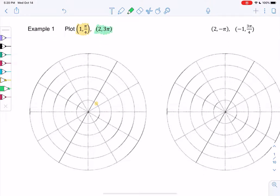Let's try (2, 3π). For 3π, we have 0, π, 2π, 3π. We land back on π, and go out to 2. That's it. These are just single points.